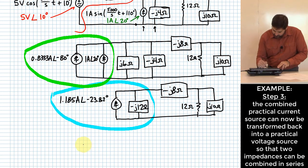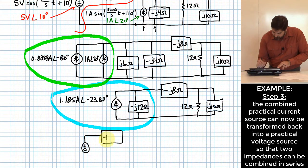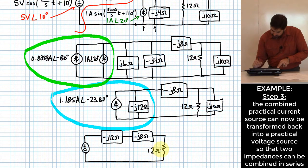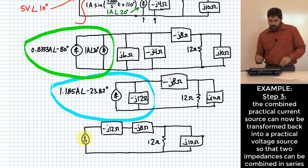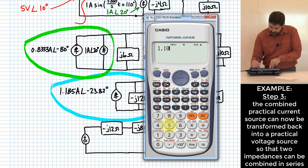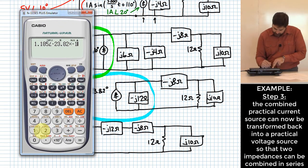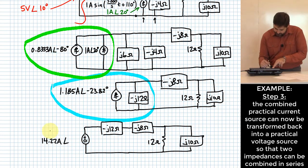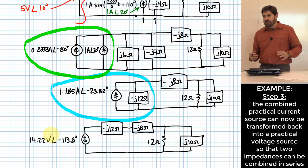How about if I take that current source that is now in parallel with that impedance and I convert that into an equivalent practical voltage source? What value do I need for my voltage source over here? It's going to be the value that I had for my current source multiplied by that complex impedance. 1.185 at negative 23.82, that's going to get multiplied by negative 12i. That gives me 14.22 at an angle of negative 113.8 degrees. And that should be volts.